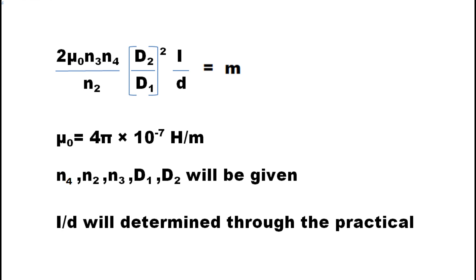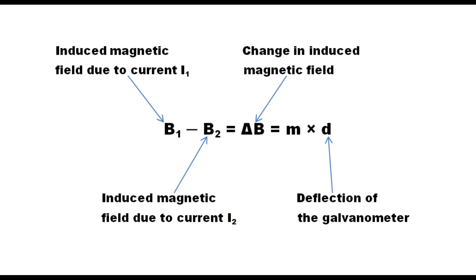This is the equation we are going to use to calculate the constant M. Here mu_0 is the absolute permeability of free space, and N4, N2, N3, D1, and D2 are constants which will be provided. We will find out the value of I by D in the practical later on. This is the main equation for the calculation. Here B1 is the induced magnetic field due to the saturation current I1, and B1 will be kept constant throughout the practical. B2 is the induced magnetic field due to current I2, which we will vary. Through the galvanometer we determine the change in induced magnetic field, del B. M is a constant calculated in the previous step and D is the deflection of the galvanometer.